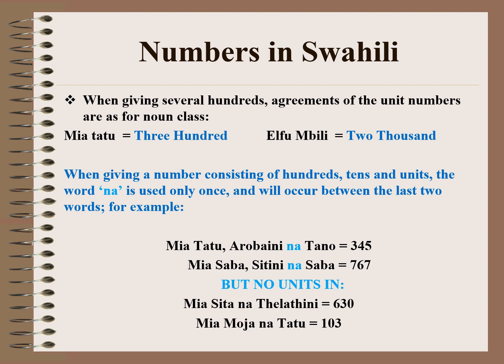When giving several hundreds, agreements of the unit numbers are as for noun class. Miatatu means 300, Elfumbili means 2000. When giving a number consisting of hundreds, tens and units, the word na is used only once and will occur between the last two words. For example, Miatatu arubaini na tano is 345. Na, in Swahili, means 'and' in English, so it is the same as you pronounce numbers in English.